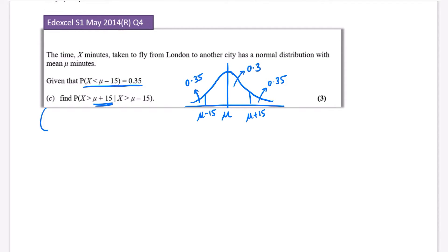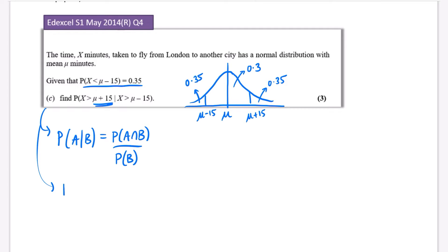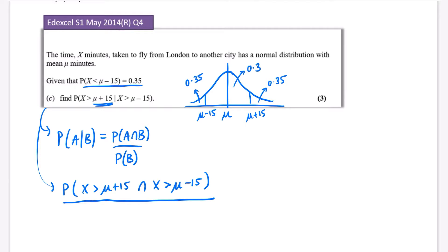For this part of the question I'm going to use the conditional probability law. As a quick reminder: the probability of A given B equals the probability of A and B occurring together divided by the probability of B. So we're going to write: the probability that X is greater than mu plus 15 and X is greater than mu minus 15, divided by the probability that X is greater than mu minus 15.